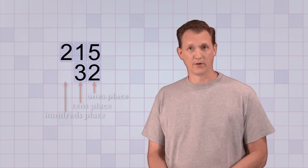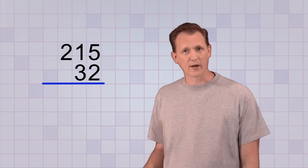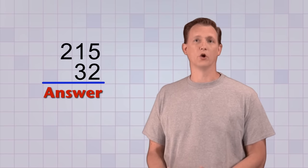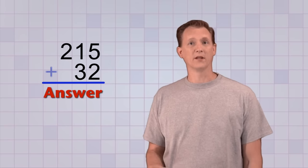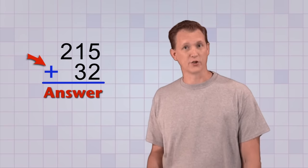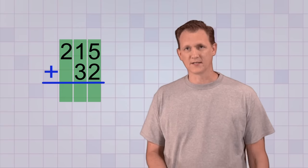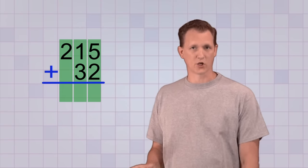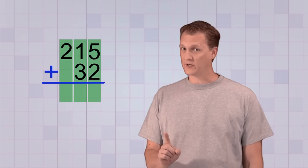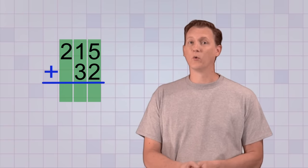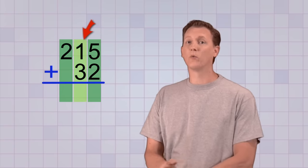After our numbers are lined up, we draw a line just below the bottom number because our answer is going to go below that. We also put a plus sign down here on the left side to show that we're adding. By stacking the numbers up, we've formed columns for each number place, and we're going to add the digits in each column. And this is super important! We always start with the ones place column and then work our way to the left.